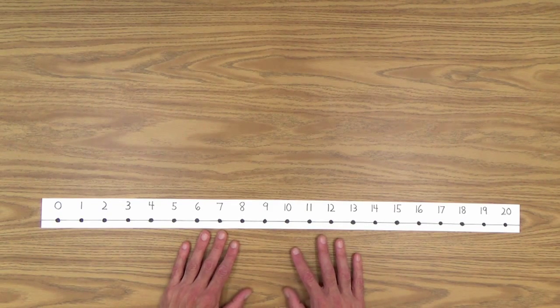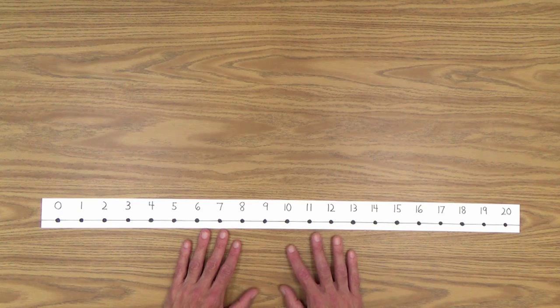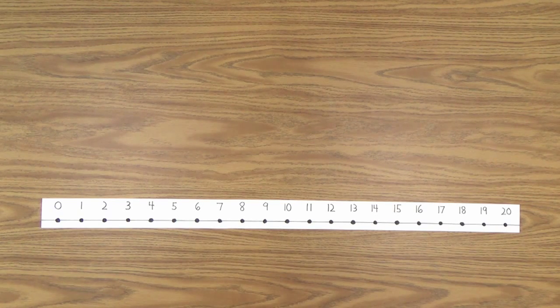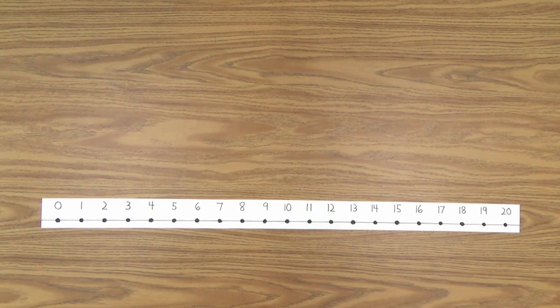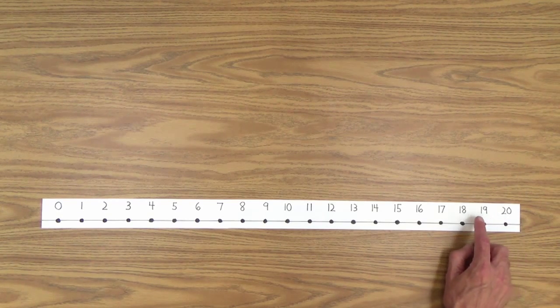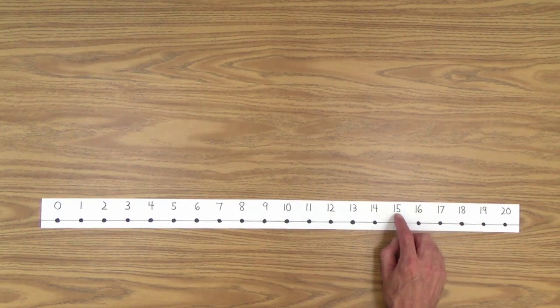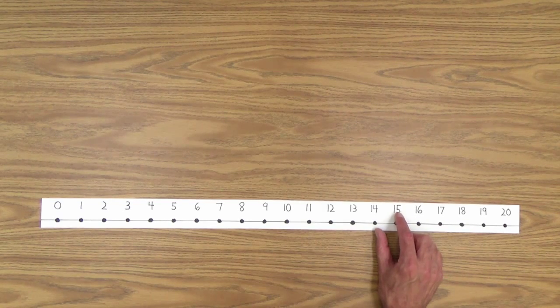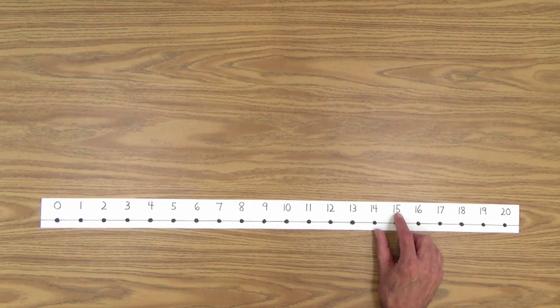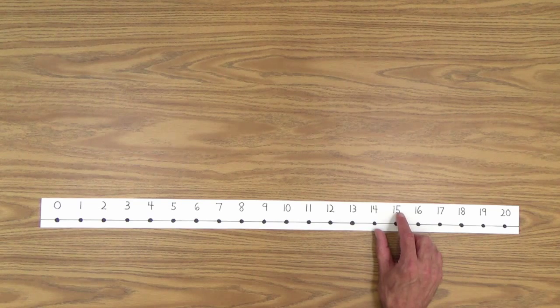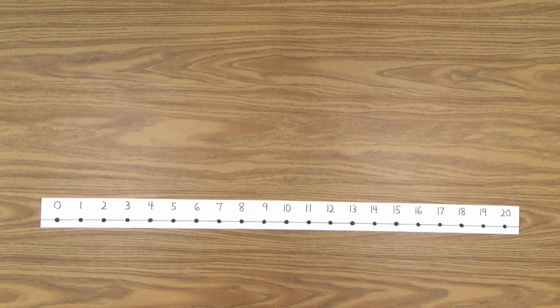So support him until he can do that. And then of course, once you feel he really has the numbers down, you could have him attempt it backwards, 20, 19, 18, 17, 16, 15, and so on and so forth. And if he has mastered the numbers, he will be able to do that.